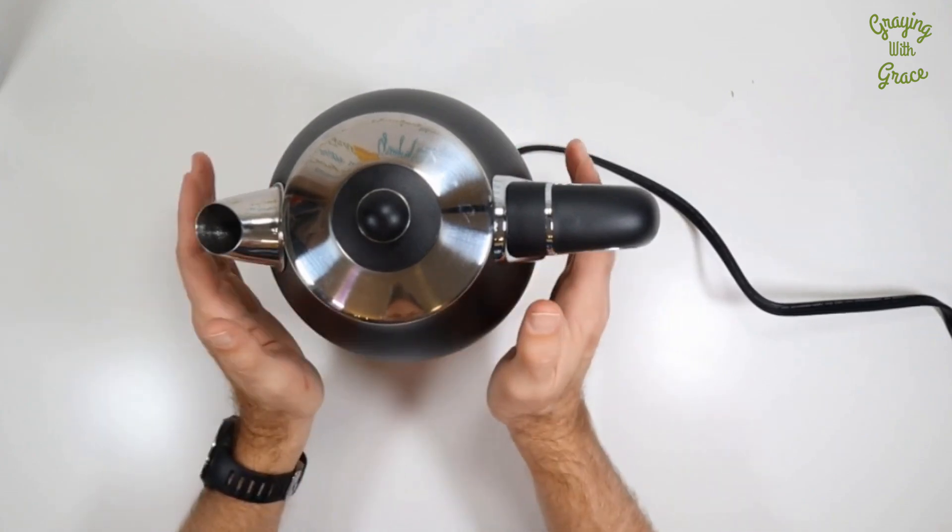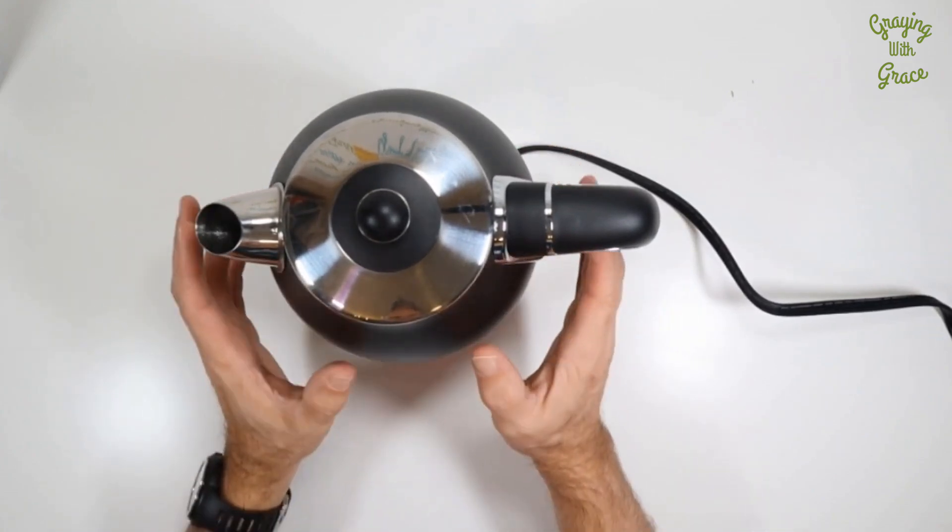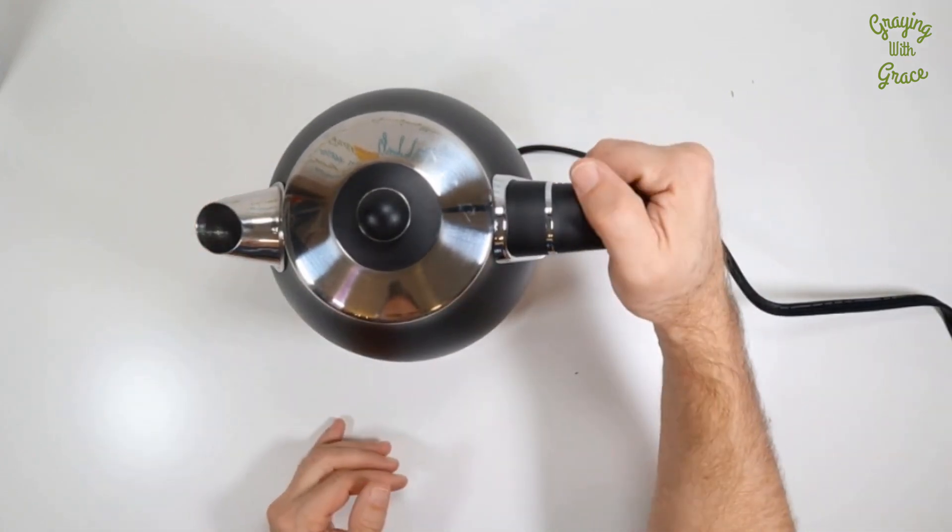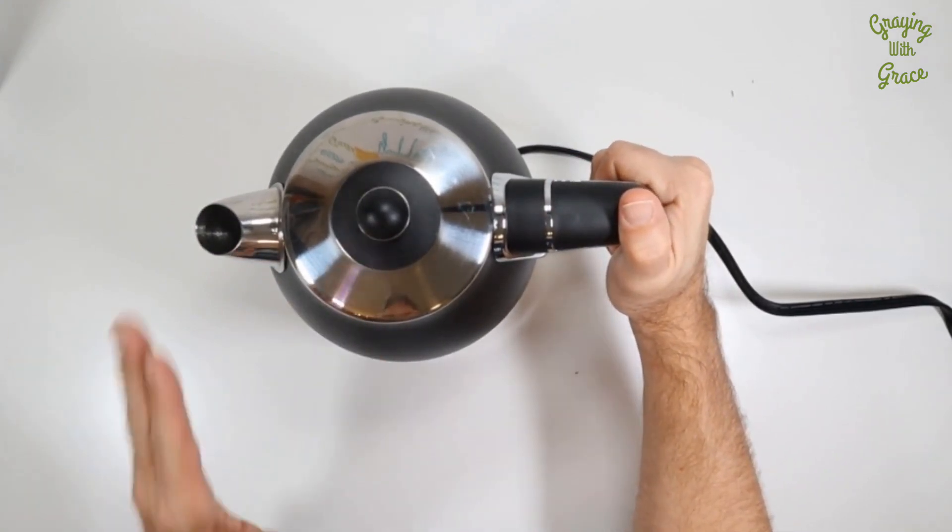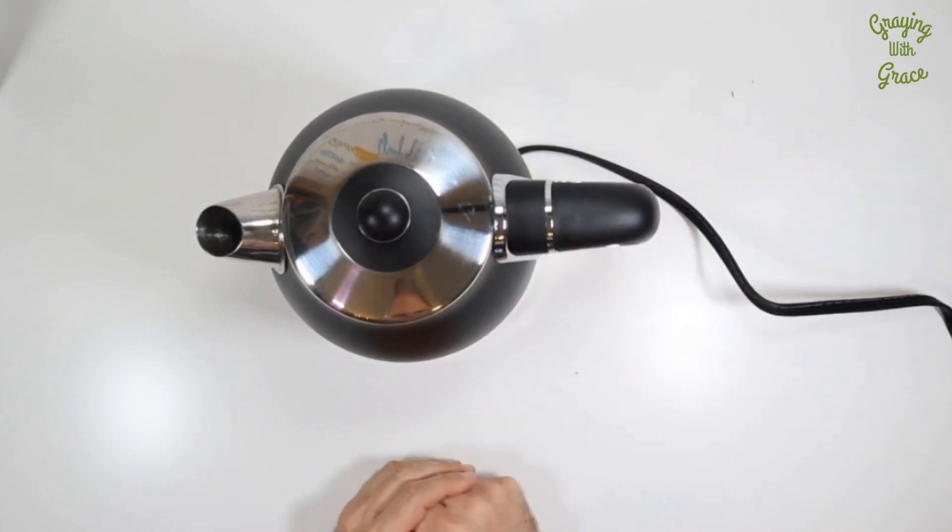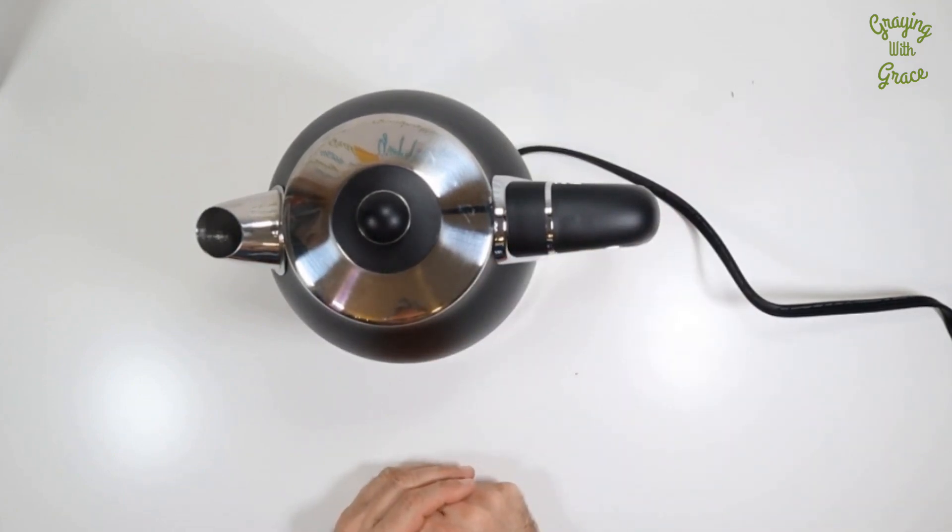The body of the kettle is very hot because of that stainless steel construction. The handle itself is cool to the touch, so no concerns with that. Of course, the lid is very hot. The spout's hot. So you don't want to touch any of those after you've got it heated up.